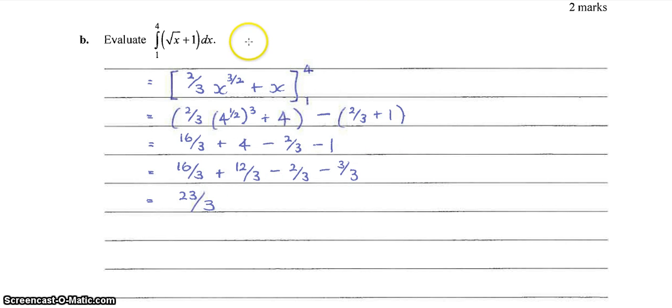Moving on, we need to find the evaluated definite integral. So if we anti-differentiate what's inside the brackets there, we get 2 on 3 x to the 3 on 2 plus x. With our terminals of 4 and 1, if we sub all of that in, being careful to use lots of brackets so we don't muck up any of the negatives...